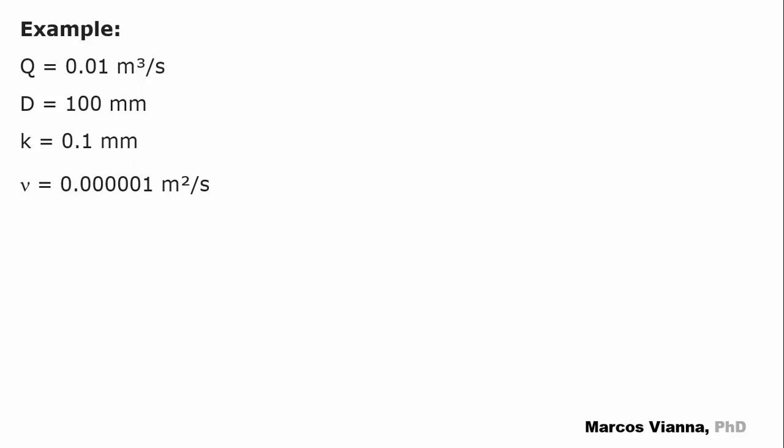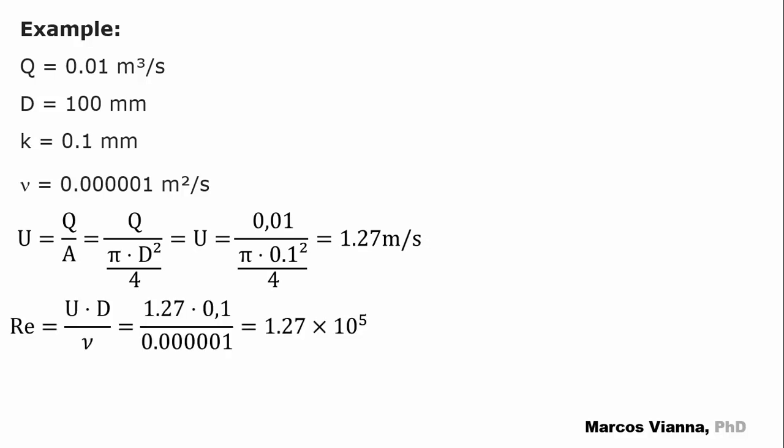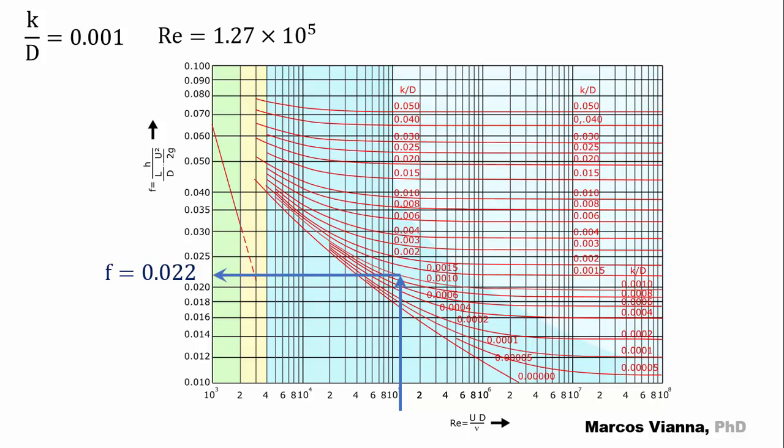Let's solve an example. These data are typical of water supply systems. We calculate the average velocity of the water, the Reynolds number, and the K over D relationship. This is what happens on the Moody diagram. Observe that the flow lies within the transition zone. We find f equals 0.022. It's a very common value.